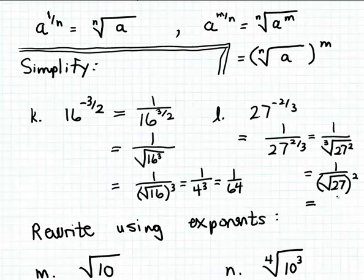It's easy to simplify the cube root of 27. The cube root of 27 is 3 because 3 cubed is 27. So we have 1 over 3 squared here, which is 1 ninth. So 27 to the minus 2 thirds power is another way of writing 1 ninth.